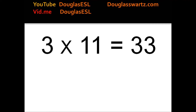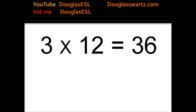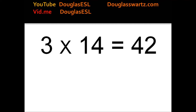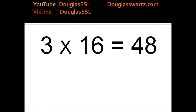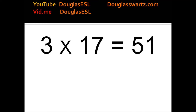3 times 11 equals 33. 3 times 12 equals 36. 3 times 13 equals 39. 3 times 14 equals 42. 3 times 15 equals 45. 3 times 16 equals 48. 3 times 17 equals 51. 3 times 18 equals 54.